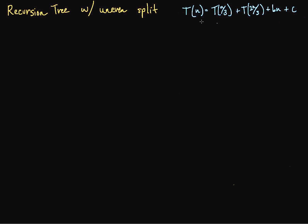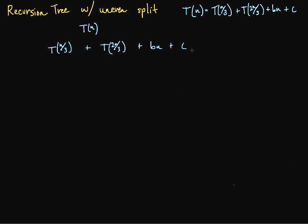Here's our running time — our recurrence relation. We'll start off with T(n). Down here we have T(n/3) plus T(2n/3), and then we have bn plus c.